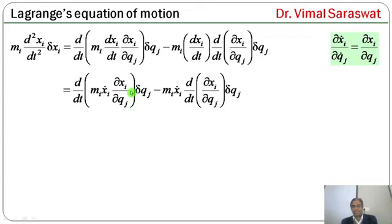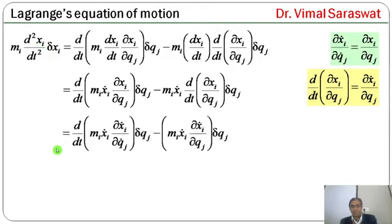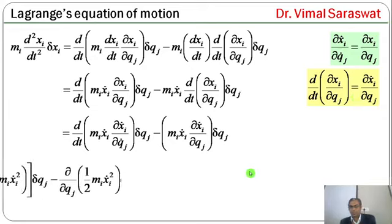Using ∂xi/∂qj = ∂xi_dot/∂qj_dot and d/dt(∂xi/∂qj) = ∂xi_dot/∂qj, the first term becomes: d/dt(mi * xi_dot * ∂xi_dot/∂qj_dot) * δqj - mi * xi_dot * ∂xi_dot/∂qj * δqj. The term mi * xi_dot * ∂xi_dot/∂qj_dot can be written as ∂/∂qj_dot(½ * mi * xi_dot²), and similarly mi * xi_dot * ∂xi_dot/∂qj = ∂/∂qj(½ * mi * xi_dot²).